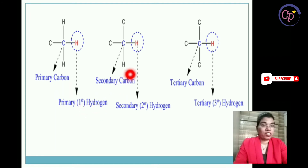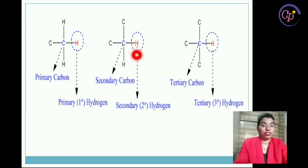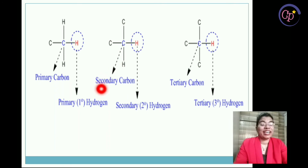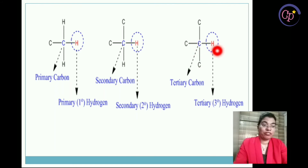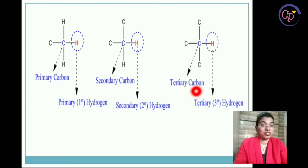For this second structure, you again need to find out the degree for the circled hydrogen. Check the degree of the carbon atom to which it is attached — this carbon is attached to two other carbon atoms, so it is showing secondary carbon. Therefore the hydrogen atom will also be showing secondary or two degree hydrogen. Similarly for the third structure, the central carbon is showing tertiary three degree, so the hydrogen attached to it will also be a tertiary hydrogen.